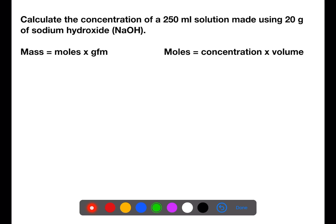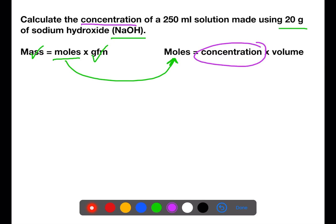This second question looks at this from a slightly different point of view. We are to calculate the concentration of a 250 ml solution that has been made using 20 grams of sodium hydroxide. Looking at the mass equation, we have been given mass in the question as 20 grams. From the formula given we could calculate the gram formula mass, which means we could calculate moles and transfer it to the second equation. Here we are trying to calculate the concentration, and we've been given the volume in the question as 250 ml.